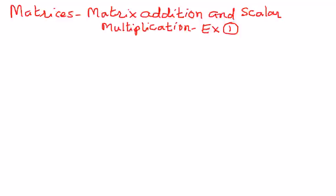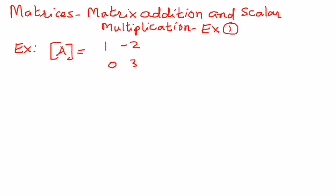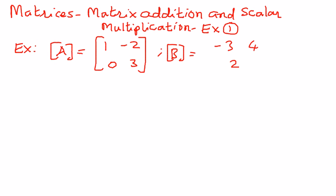Let's take an example. In this example, let us say we have two matrices given to us. Matrix A is 1, negative 2, 0, and 3. And matrix B is negative 3, 4, 2, and 1.